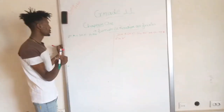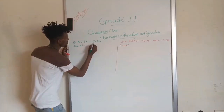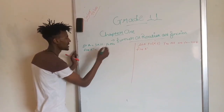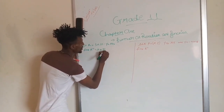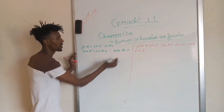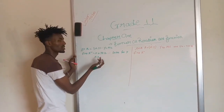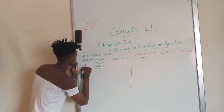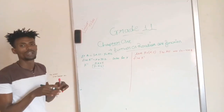This is how to find R inverse. We have to find R inverse — interchange x and y. For example, y equals x plus 3. For the inverse, interchange x and y: x equals y plus 3, then solve for y. So y equals x minus 3. This is the inverse.